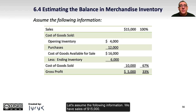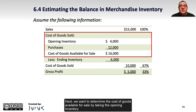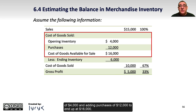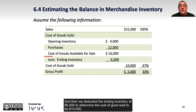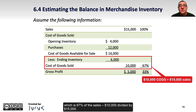Let's assume the following information. We have sales of $15,000. We want to determine the cost of goods available for sale by taking the opening inventory of $4,000 and adding purchases of $12,000 to end up at $16,000. Then we deduct the ending inventory of $6,000 to determine the cost of goods sold to be $10,000, which is 67% of the sales — $10,000 divided by $15,000.